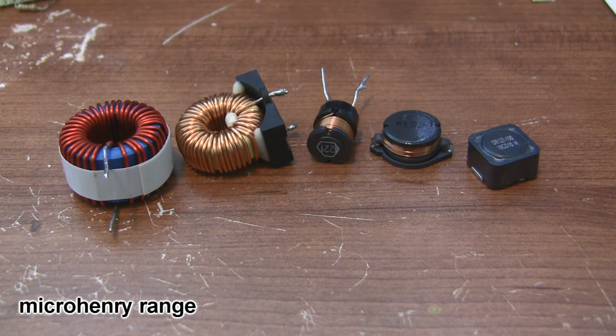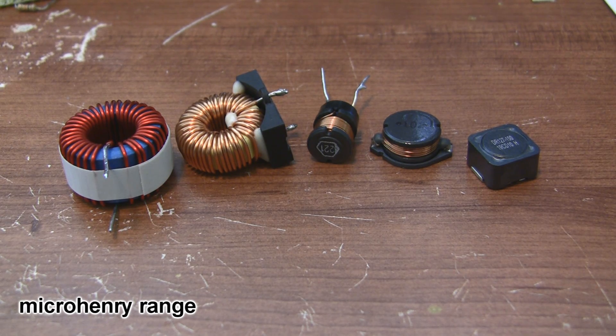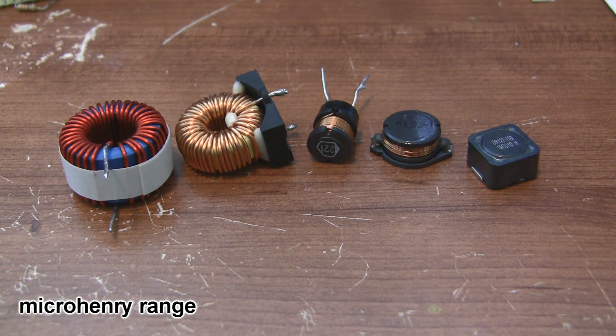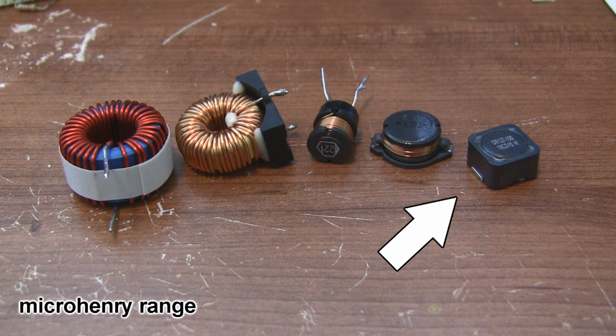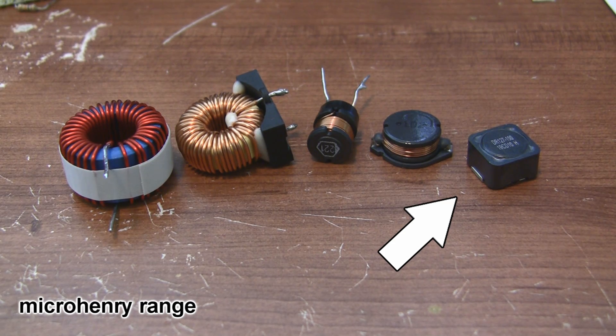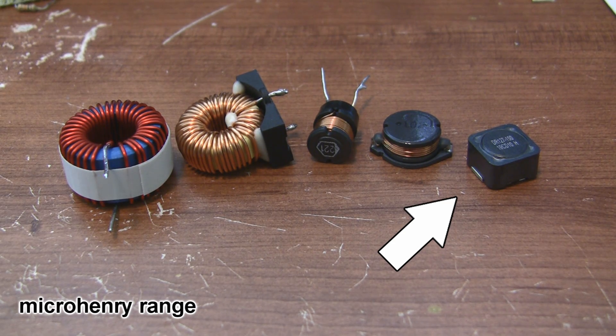Inductors in the micro Henry range filter out frequencies from about 50 kilohertz to a few megahertz and beyond. They're typically used in DC power supplies to smooth out the voltage. The inductor on the right is shielded so its magnetic field won't interfere with other components nearby.